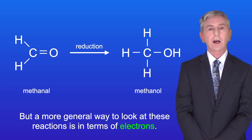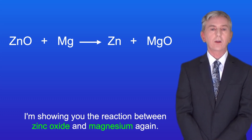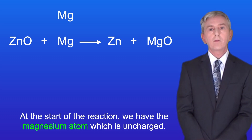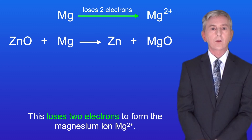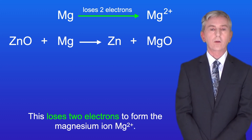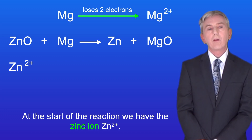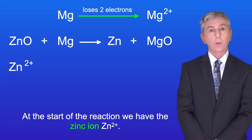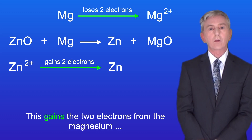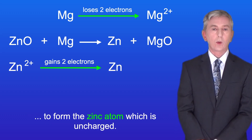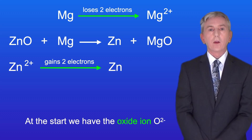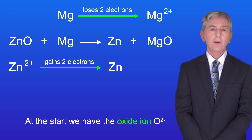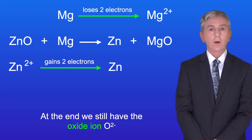But a more general way to look at these reactions is in terms of electrons. I'm showing you the reaction between zinc oxide and magnesium again. At the start of the reaction, we have the magnesium atom which is uncharged. This loses two electrons to form the magnesium ion Mg2+. At the start of the reaction, we have the zinc ion Zn2+. This gains the two electrons from the magnesium to form the zinc atom which is uncharged. The oxygen remains unchanged during this reaction. At the start we have the oxide ion O2-, and at the end we still have the oxide ion O2-.